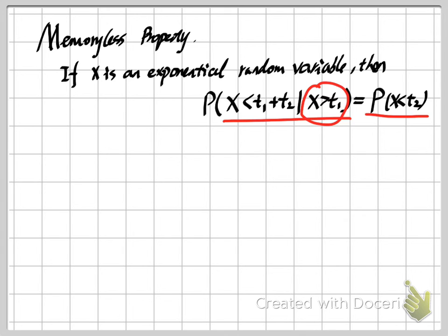This is my explanation of the exponential random variable and its distribution, including the two important parameters — mean and variance — and the important memoryless property. This is the end of this video. In the next video, I will continue to talk about more topics in probability. Please subscribe to this channel, and I hope to see you in the next video.